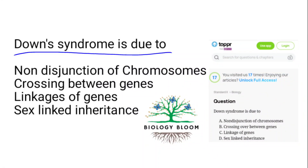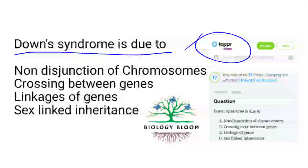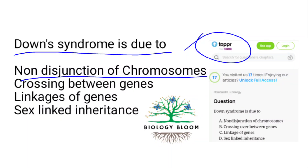Down's syndrome — taken from Topper. Down's syndrome is caused by an error in cell division called non-disjunction. It results in an embryo with three copies of chromosome number 21 instead of the usual two. It is due to non-disjunction of chromosomes.